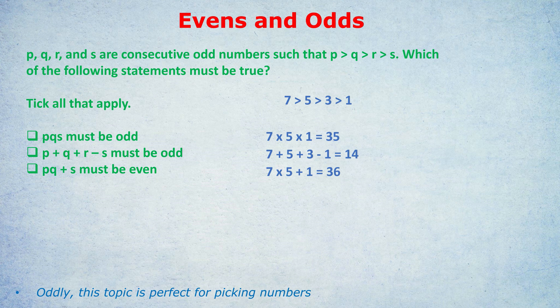So answers A and C are the ones that we would tick. Even and odd questions are particularly susceptible to picking numbers, and you don't have to pick multiple sets of numbers because what's true for one set of evens and odds is true for all of them.